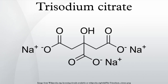Trisodium citrate has the chemical formula Na3C6H5O7. It is sometimes referred to simply as sodium citrate, though sodium citrate can refer to any of the three sodium salts of citric acid. It possesses a saline, mildly tart flavor. It is mildly basic and can be used along with citric acid to make biologically compatible buffers.